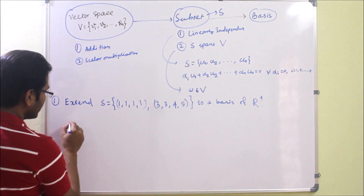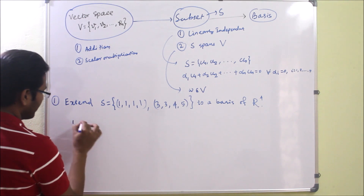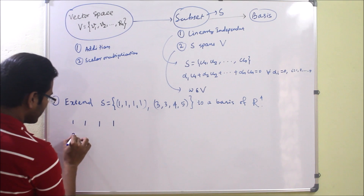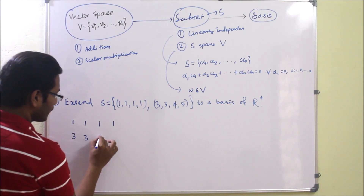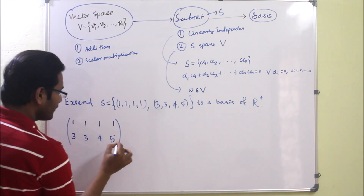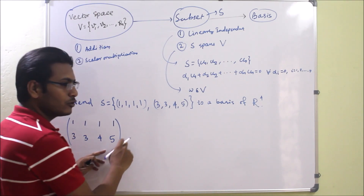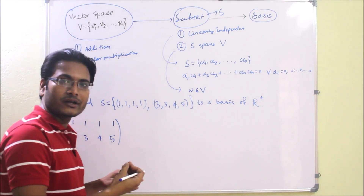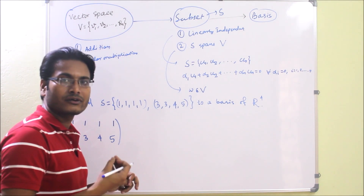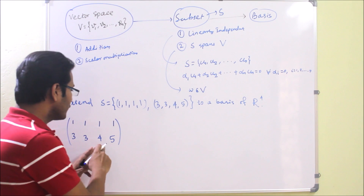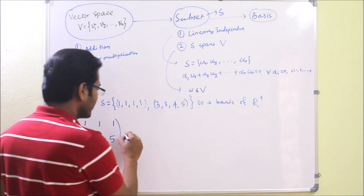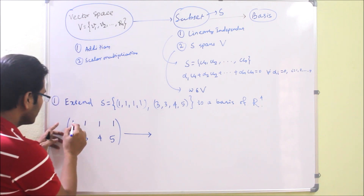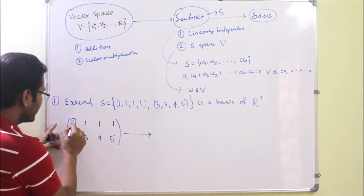First we will write the vectors in matrix form. The first vector is (1, 1, 1, 1) and the second is (1, 3, 4, 5). Now we have to convert this into row echelon form by applying row transformations to get an upper triangular matrix. The first pivot element is the first leading non-zero element of a row.